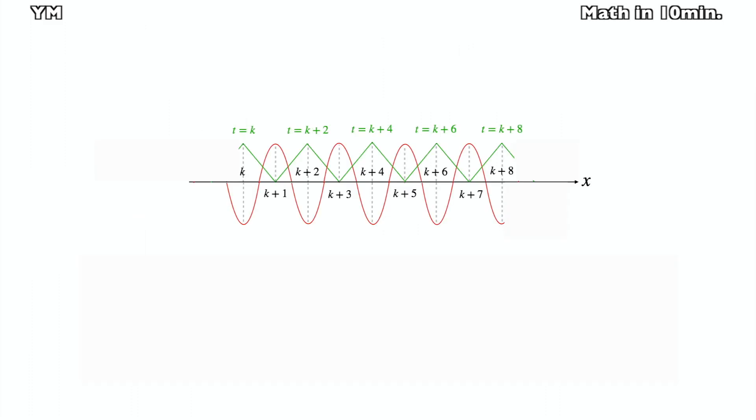Again, gt has local minimum values where t equals k, k plus 2, k plus 4, k plus 6, and k plus 8.